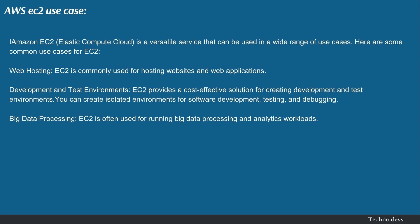AWS EC2 Use Cases: Amazon EC2, Elastic Compute Cloud, is a versatile service that can be used in a wide range of use cases. Web Hosting — EC2 is commonly used for hosting websites and web applications. Development and Test Environments — EC2 provides a cost-effective solution for creating isolated environments for software development, testing, and debugging. Big Data Processing — EC2 is often used for running big data processing and analytics workloads.